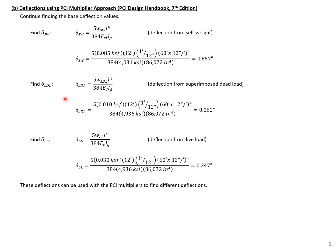We can do the same thing with our superimposed dead load. Note the difference here — we use the modulus of elasticity for our concrete based on ultimate concrete strength, E_c, and we find the base deflection from superimposed dead load equal to 0.082 inches. Finally, for our base live load deflection, we use our distributed live load and the modulus at release with gross section properties, finding a live load deflection of 0.247 inches.